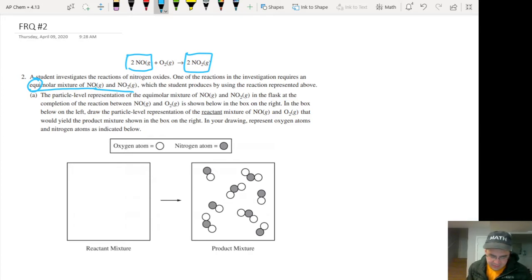Yeah. So if you start out with some oxygen, then you're going to need to basically react it until you get some NO2. So here you go. It says the particle level representation of the equimolar mixture of NO and NO2 in the flask at the completion of the reaction is shown below in the box at the right. In the box below on the left, draw the particle level representation of the reactive mixture of NO and O2 that would yield the product mixture shown in the box on the right. In your drawing, represent oxygen atoms and nitrogen atoms as indicated below. So oxygen atoms are white and nitrogen atoms are gray. And so if we look, this is NO2 right here. And I'll put all these in.